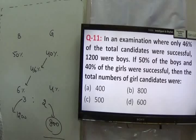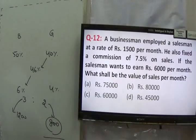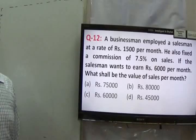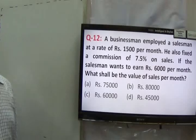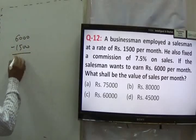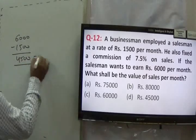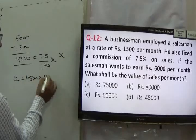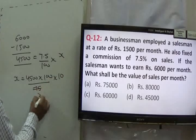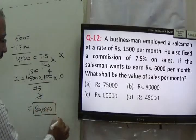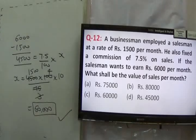This type of question can also be solved using the concept of alligation mixtures — you may watch my video on alligation mixture for more detail. Statement number 12: A businessman employed a salesman at Rs. 1500 per month with a commission of 7.5% on sales. If the salesman wants to earn Rs. 6000 per month, then out of 6000, 1500 is salary, so he needs Rs. 4500 from commission. Since 4500 is 7.5% of sales, sales = 4500 × 100/7.5 = Rs. 60,000. Answer: total sale must be Rs. 60,000.